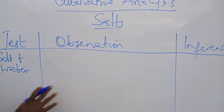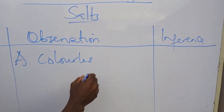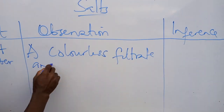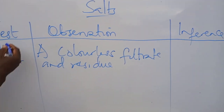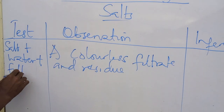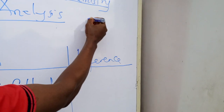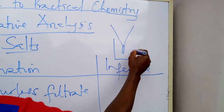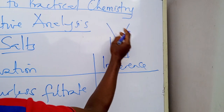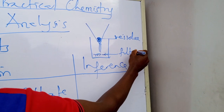It depends on whether the salt is soluble or insoluble. You may have a colorless filtrate and residue, because when the salt and water are mixed and filtered, you get a colorless filtrate and residue. The filtrate is the liquid component that passes through — here on the funnel with the filter paper — and the residue remains behind.